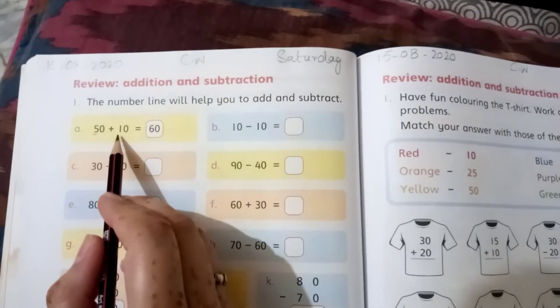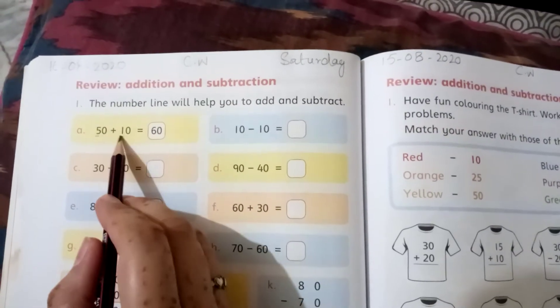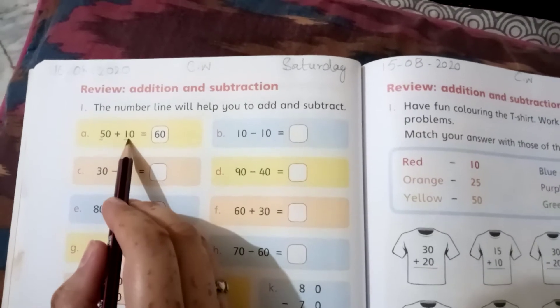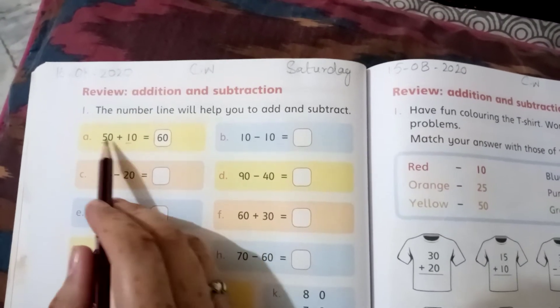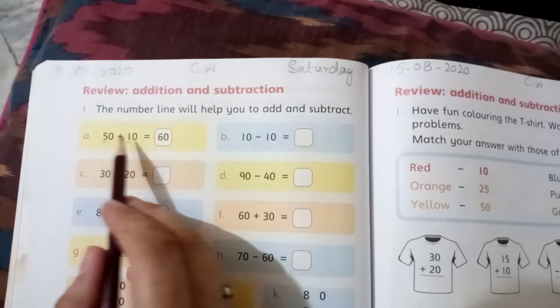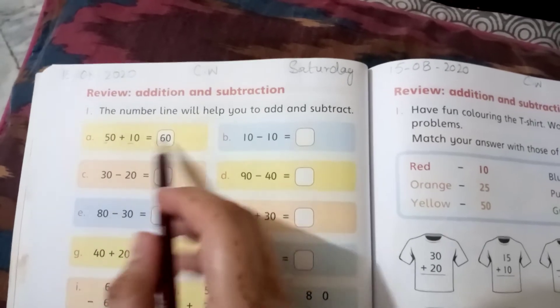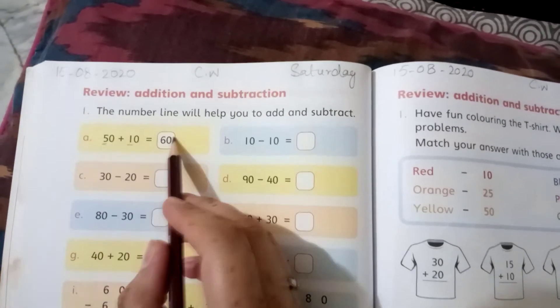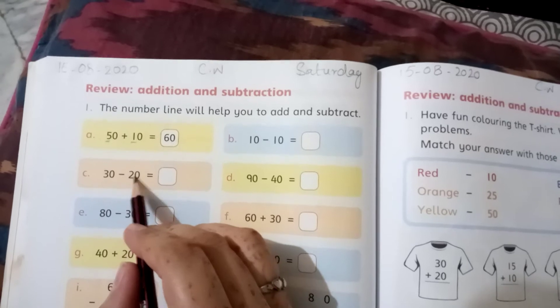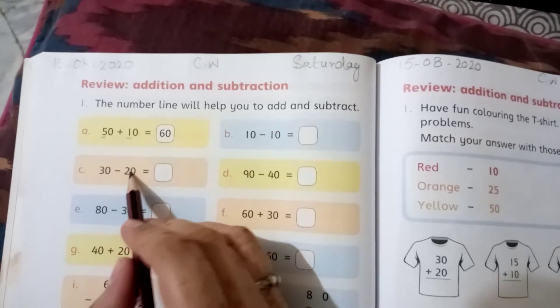You have to see the first digit and the second digit. For example, 5 and 1. The plus sign means you add: 5 plus 1 equals 6. So the zeros will be common, and here it will be 60. With subtraction, 3 minus 2 equals 1, so it's 10.